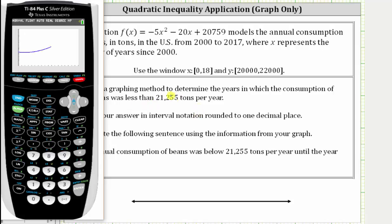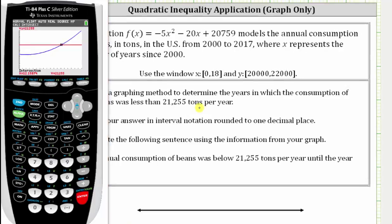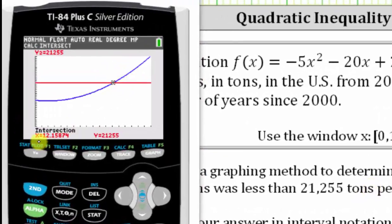We're trying to determine when the consumption is less than this amount. Notice how the blue graph is below the red graph to the left of this point of intersection. We press second, trace, option five for intersect, and press enter three times. The intersection point is when x is approximately 12.2, rounded to one decimal place. Therefore, the consumption is less than 21,255 tons when x is less than 12.2. But this model begins at the year 2000 when x equals zero, so the solution is x greater than or equal to zero and less than 12.2.